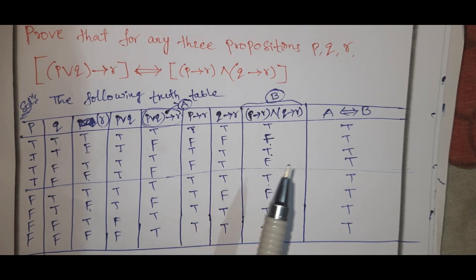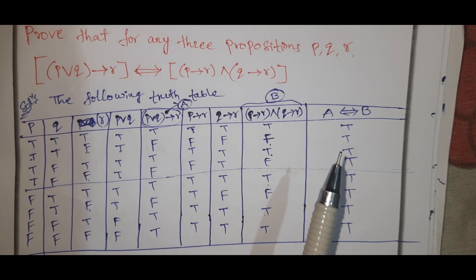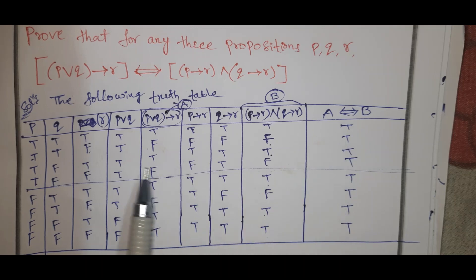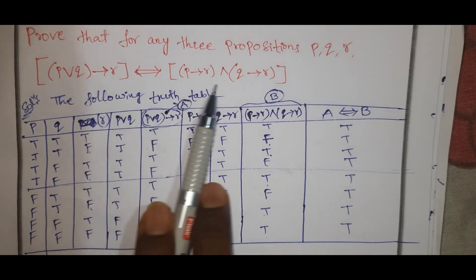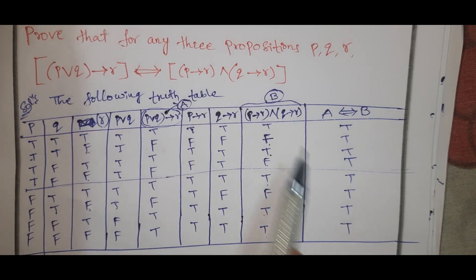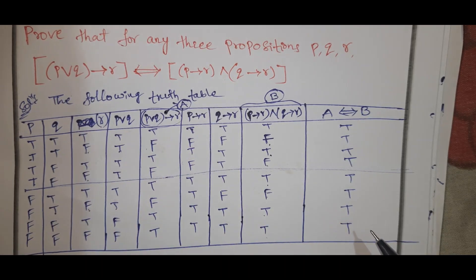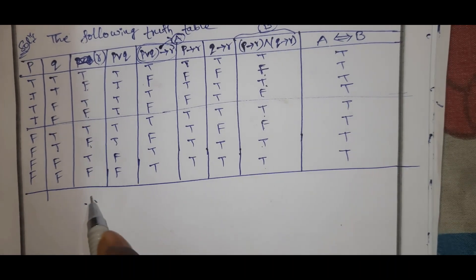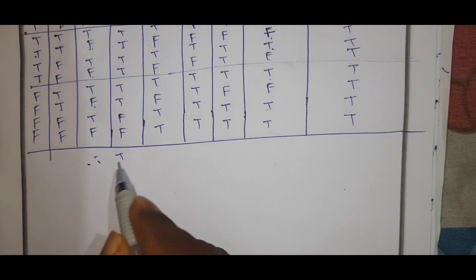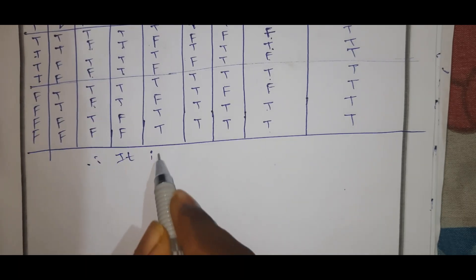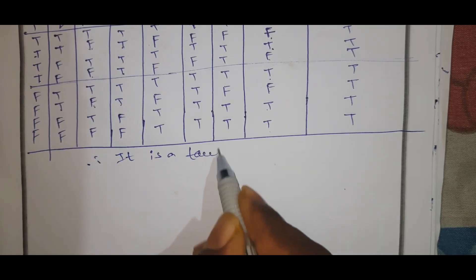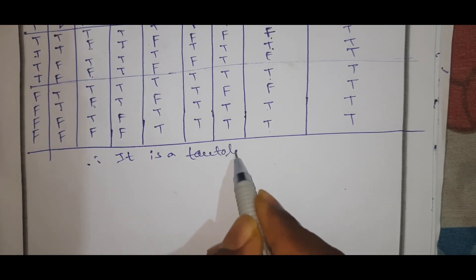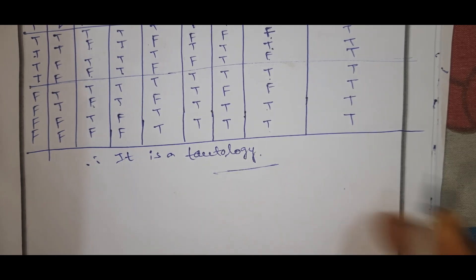Prove that for any three propositions P, Q, R — the result is tautology. Truth is tautology, true-false is contingency, and false is contradiction. It is a tautology.